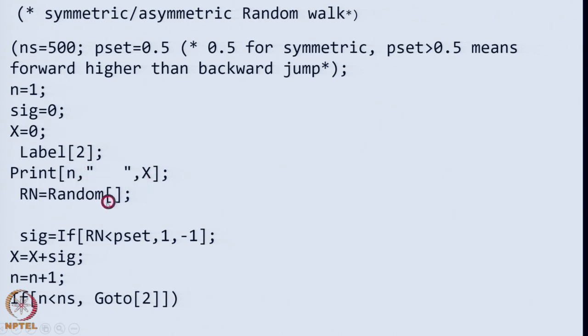Enter a do loop here with label 2. Print n and x, generate a random number. Random is a command which generates a random number r n. The sigma i which I mentioned in my previous slide is the jump length at the ith trial or ith step. That is decided by an if command. If the random number I generated is less than p set then it says jump 1, otherwise it will take minus 1.